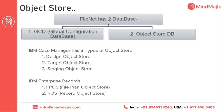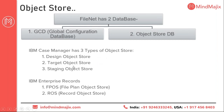In Case Manager you have three types of object stores: design object store, target object store, and staging object store. In a development environment you will typically have design and target; in production or UAT you will have staging and target. For each object store you will have one database, so you can have multiple databases — multiple schemas in Oracle or multiple databases in MS SQL — to support multiple object stores.